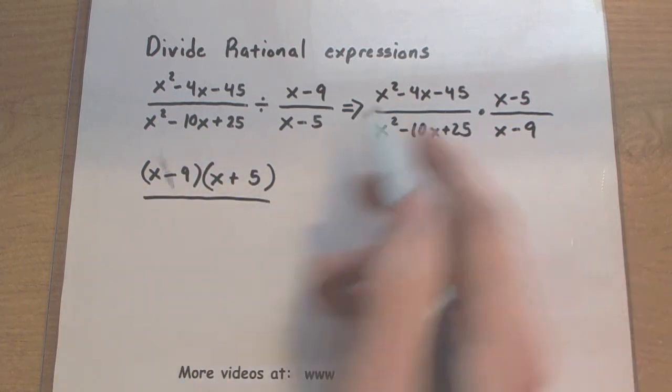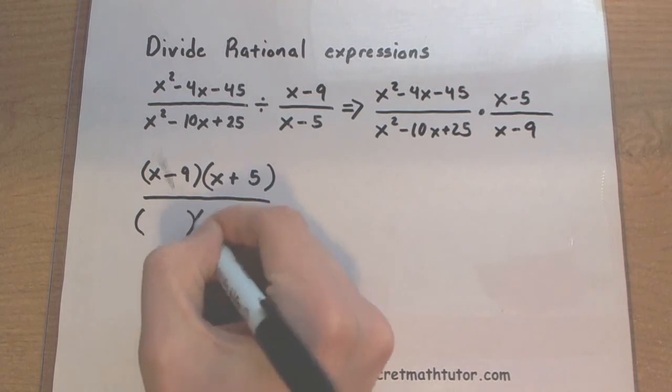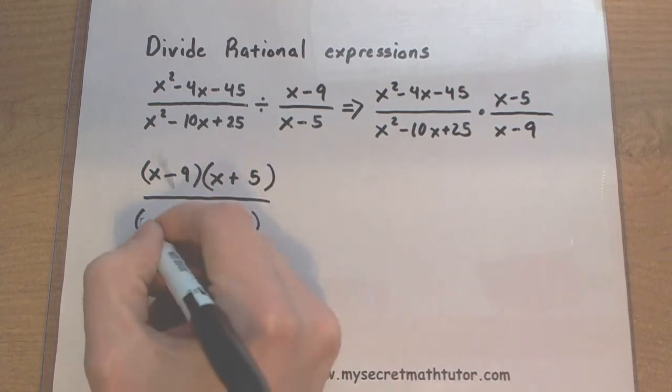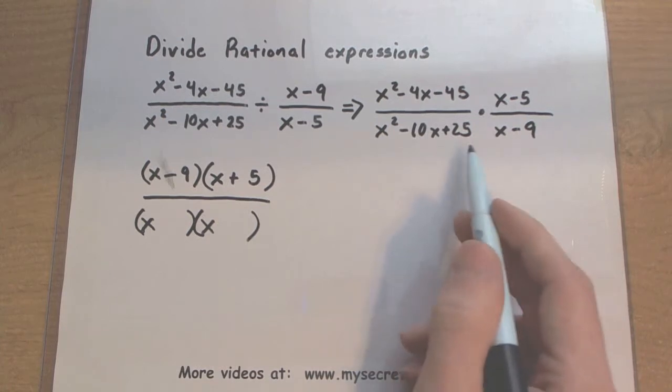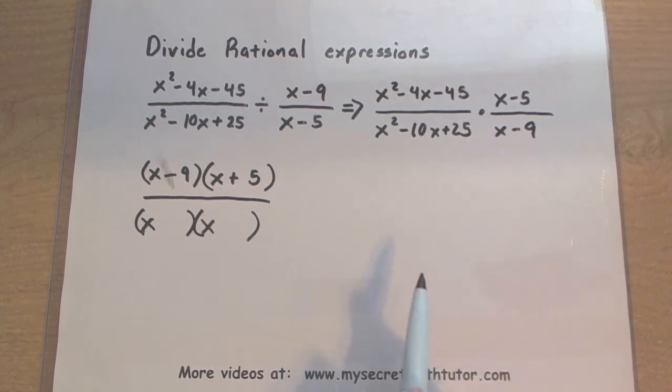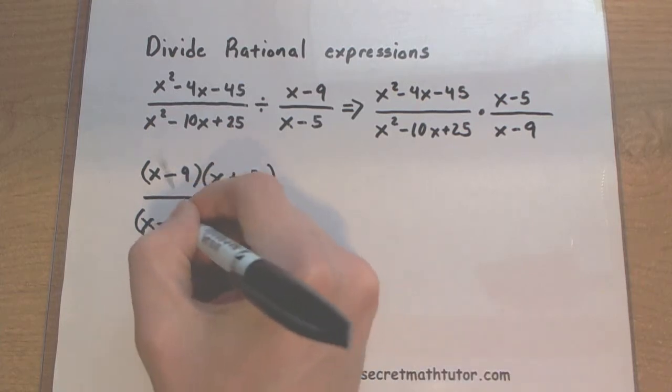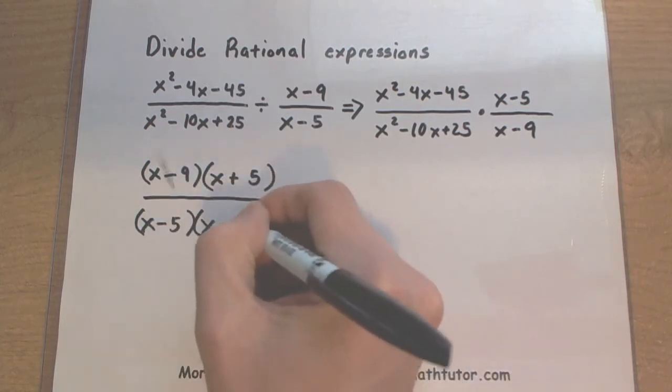Let's see if we can factor this bottom here. X times x will give me x squared. Now I need two numbers that multiply to be positive 25, but add to be negative 10. Negative 5 and negative 5 will do it.